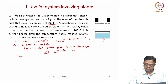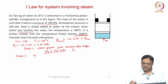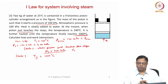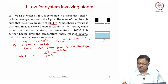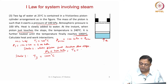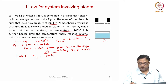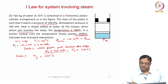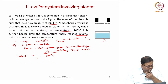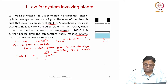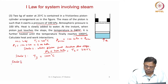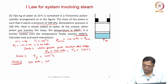Then after that, state 3 — heat is added until the temperature finally reaches 1000 degrees centigrade. So T3 will be 1000 degrees centigrade. Here, when the piston just touches the stops, T2 is also given as 240 degrees centigrade. Pressure should be constant at this point. Then pressure should increase because the piston cannot move upwards — constant volume will occur. So this is the problem.